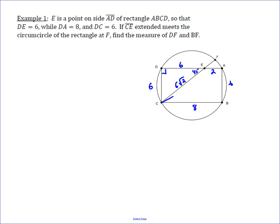And the other piece of information that's easy to find is the diagonal of this rectangle. It's going to be 10 because it's 6, 8, 10 right triangle.